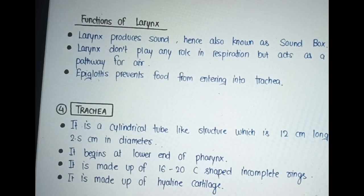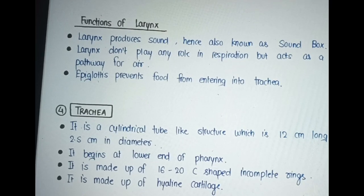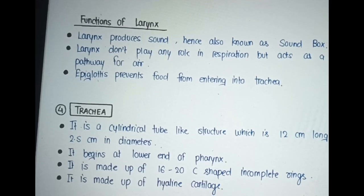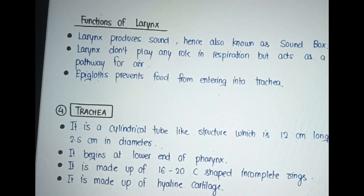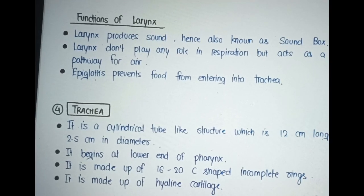Larynx. It lies between the pharynx and trachea. It is made up of the following cartilages: thyroid cartilage, cricoid cartilage, and arytenoid cartilage. It contains the epiglottis that makes sure that food must enter into the esophagus instead of the trachea.